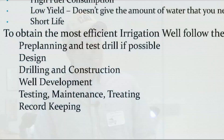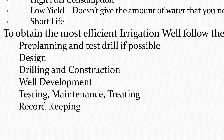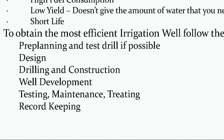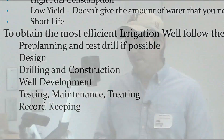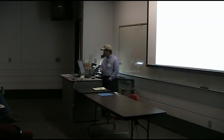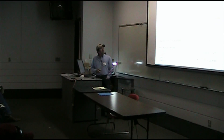To obtain the most efficient irrigation well, there are a few steps to follow. You need to pre-plan, and if possible you should drill a test hole — that gives us information on what kind of material we're going to encounter in the aquifer. You should get somebody who knows how to design the well. Do the drilling and construction, develop the well — which is very important — do testing, maintenance, and treating if needed, and keep a good record of the performance of the well.